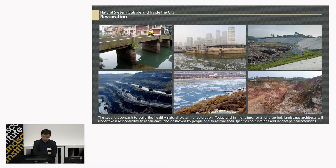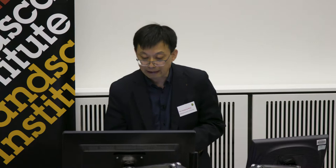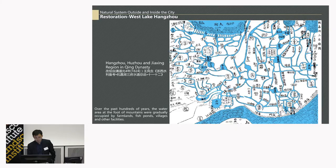The second approach to build a healthy natural system is restoration. China's environment has been damaged significantly, and for a long period into the future, landscape architects will undertake responsibility to repair land destroyed by us and to restore specific ecological functions and landscape characteristics. I'd like to introduce another project of ours. In 2001, we started the ecological restoration planning for the West Lake in Hangzhou. At that time, the lake faced a lot of problems, mainly water pollution and overcrowding of tourists. This map shows the relationship between the mountain, agriculture, water network, ponds, lakes, and the city 100 years ago.